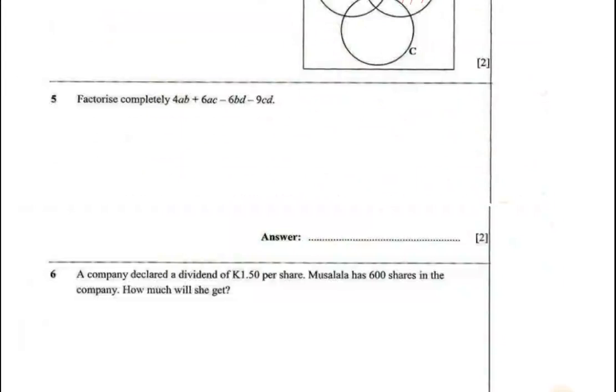We have 4ab. There's also a b here, I can group it. Minus 6bd - d is also there, so I can group it. Factor out: 2 is common, a is common.